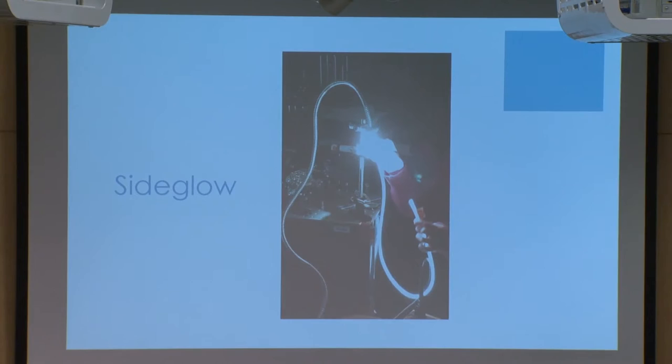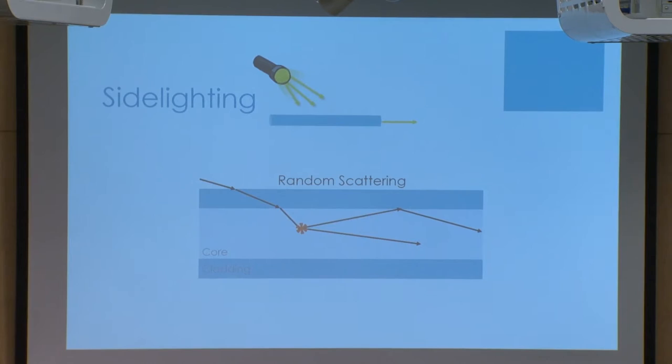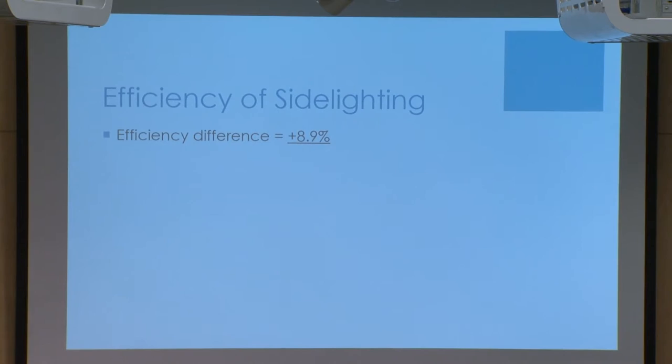The scattering is caused by random density fluctuations throughout the core of the fiber material as well as core-cladding imperfections. If this random scattering could scatter light out, then shining light through the side could also scatter light into the fiber — assuming the light rays scatter at angles greater than the critical angle so that total internal reflection can still occur. Theoretically this was possible, and experimentally it was possible too. We got an efficiency difference of about 9%.